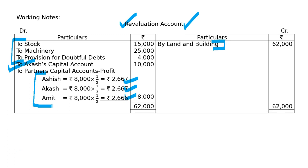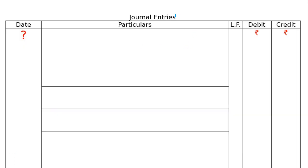In addition to these 4 entries, there are 2 more. First, advertisement suspense account shown on the asset side of the balance sheet will be written up — transferred to partners' capital accounts — when the ratio changes. Second, general reserve on the credit side of the balance sheet will also be transferred to partners' capital accounts. So in total there are 6 journal entries to pass.